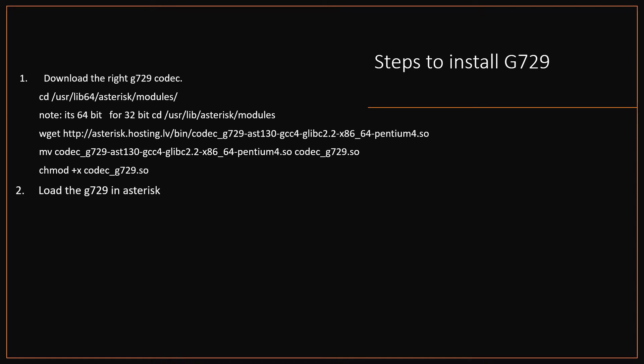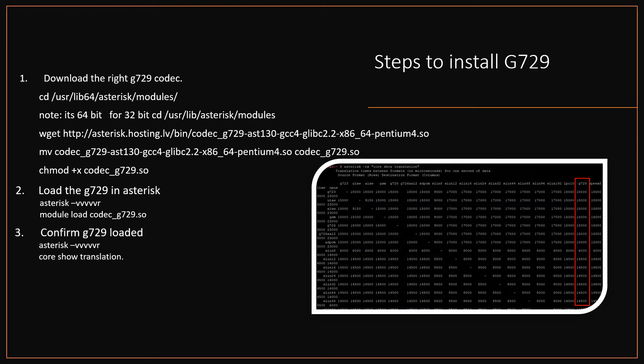Step 2: Loading G729 in Asterisk. Type 'asterisk -vvvr' to go to the Asterisk console, then type 'module load codec_g729.so'. Step 3: Confirm the G729 codec is installed by typing 'core show translation' in the Asterisk console. Make sure the G729 table shows numerical numbers as shown.